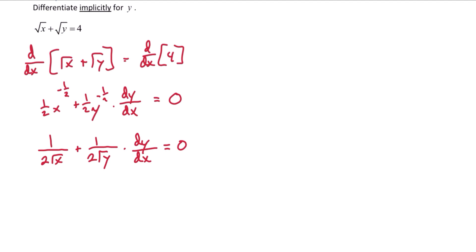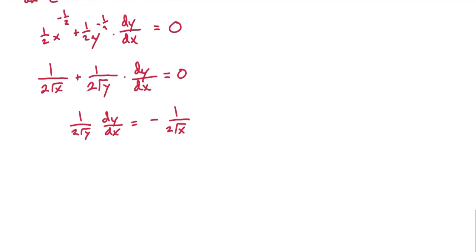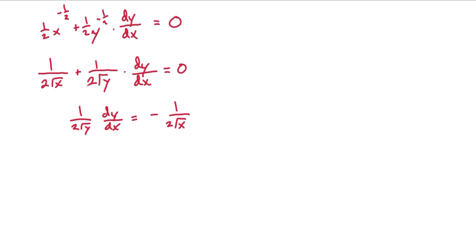And now we can start the process of isolating dy dx. So we have 1 over 2 square roots of y dy dx equals negative 1 over 2 root of x. From here we can multiply by the reciprocal in order to isolate dy dx.